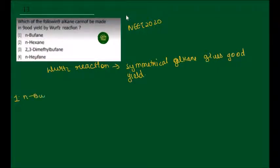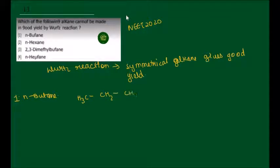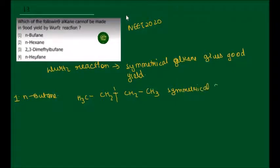First, we have N-butane. N-butane structure is: CH3-CH2-CH2-CH3. We can see that N-butane is a symmetrical alkane, so N-butane gives good yield by Wurtz reaction.